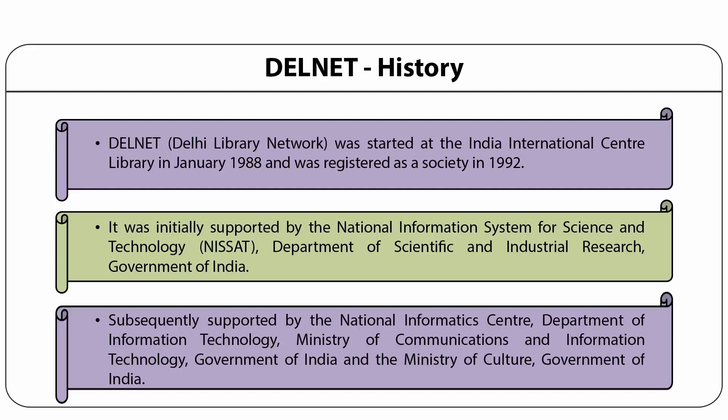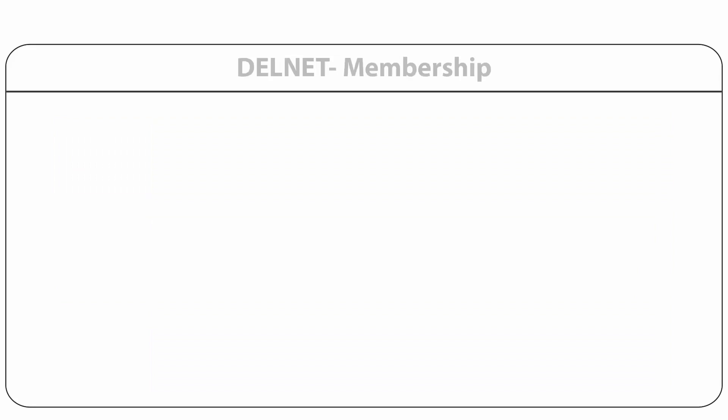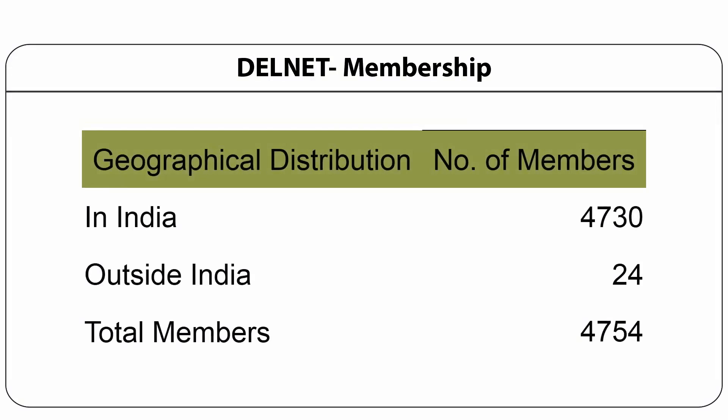Now this DELNET is called Developing Library Network. DELNET has grown and is now nearing 5,000 members around the world. Presently, it has 4,730 member libraries in India and 24 in overseas countries, for a total membership of 4,754.